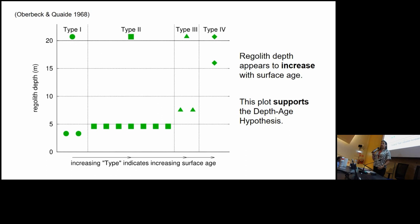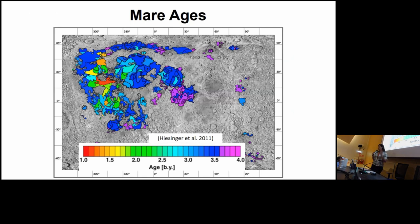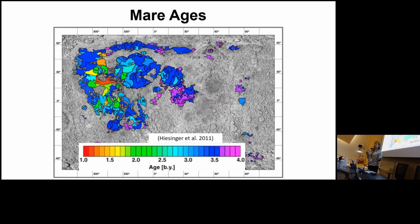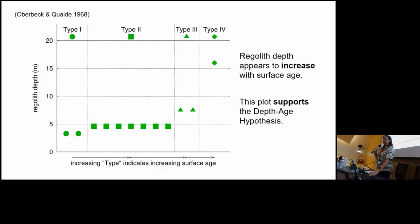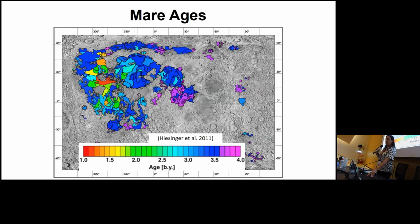Since then, crater counting has become very detailed. Hiesinger in 2011 produced a series of papers measuring ages for various mare surfaces: some older than 3.5 billion years, many around 3 billion years, and a few as young as 2 billion years. I went back to the Oberbeck and Quade data, identified which lunar orbiter images they used, and compared those locations with Hiesinger's mare ages to get actual ages for the surfaces where their data were taken.